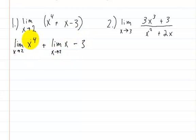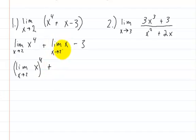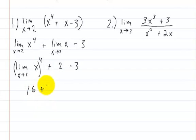We're going to take out the exponent 4, so we write the limit of x as x approaches 2, raised to the fourth power, plus the limit of x as x approaches 2, minus 3. Plugging in 2: 2 to the fourth power is 16, so we get 16 plus 2 minus 3, which equals 15. That's the answer for that one.